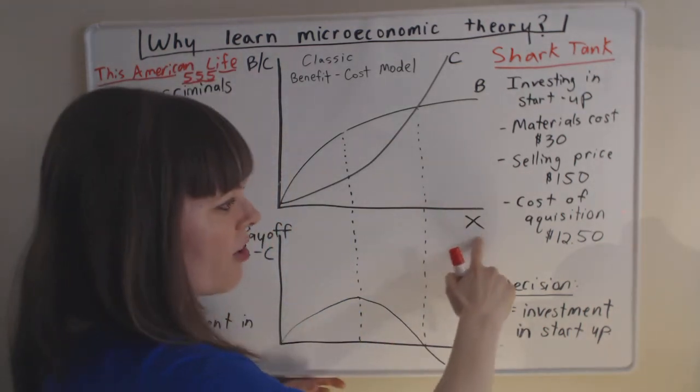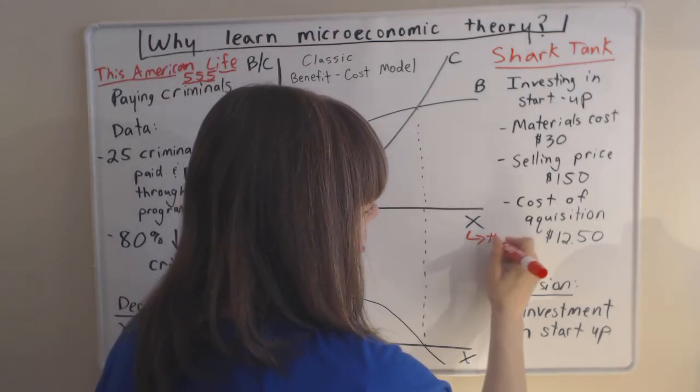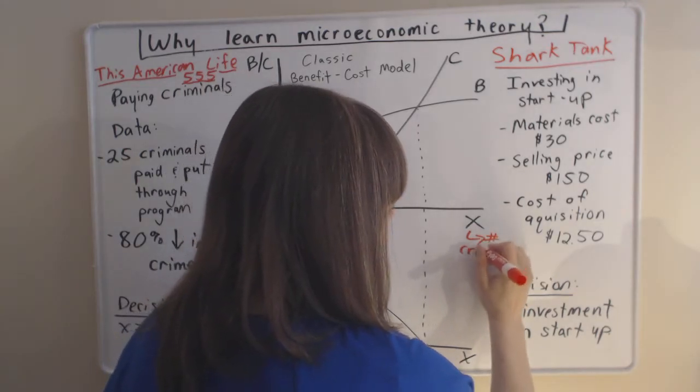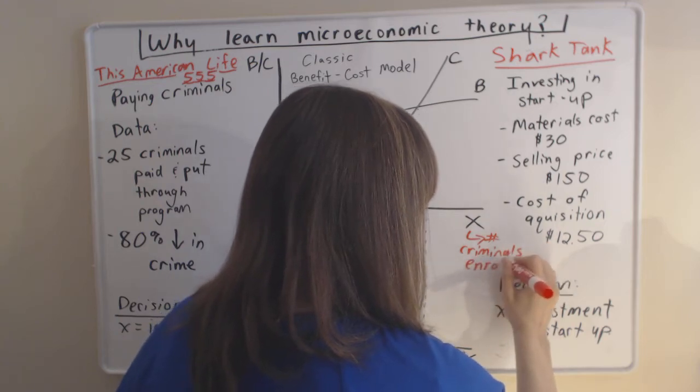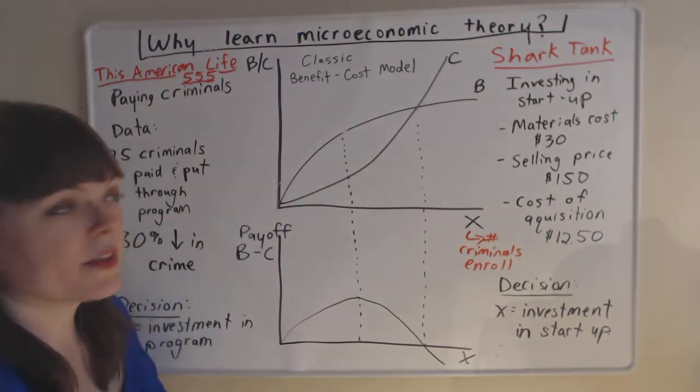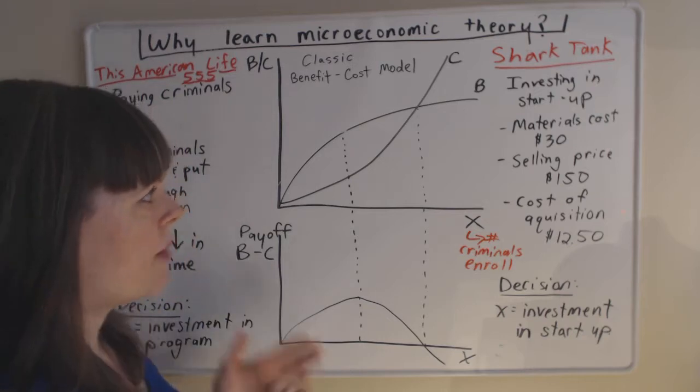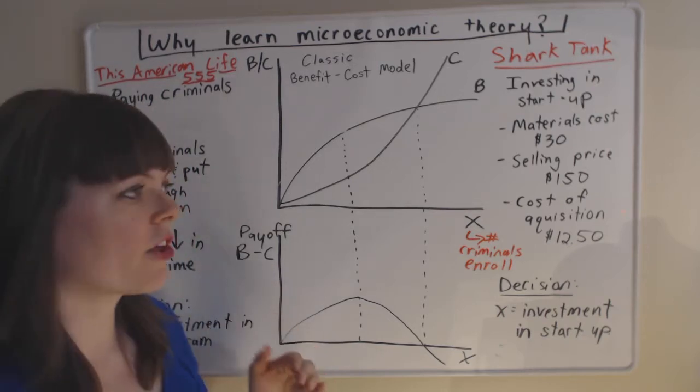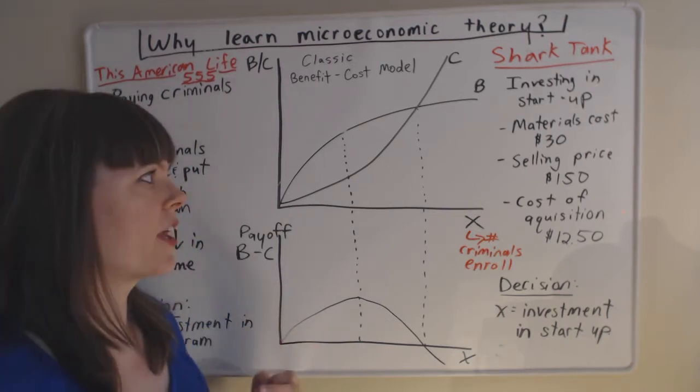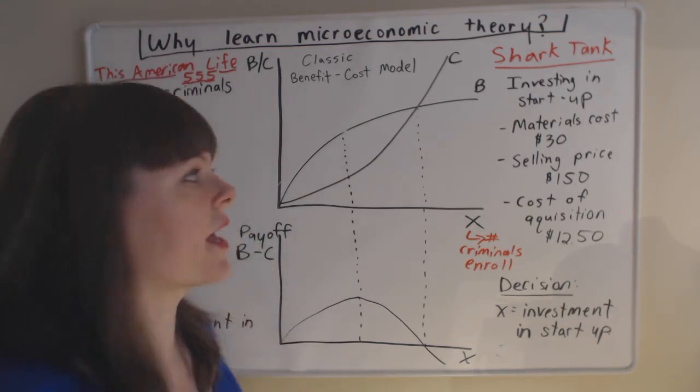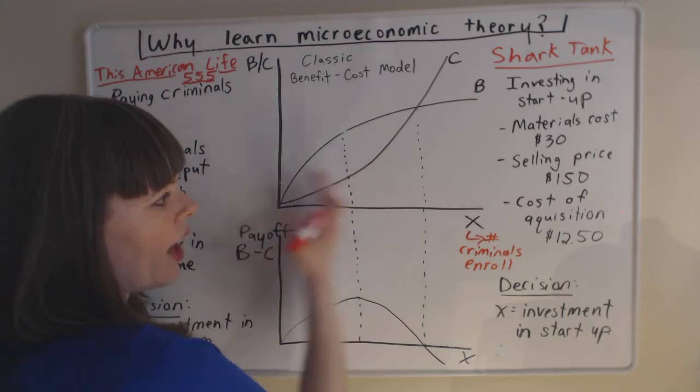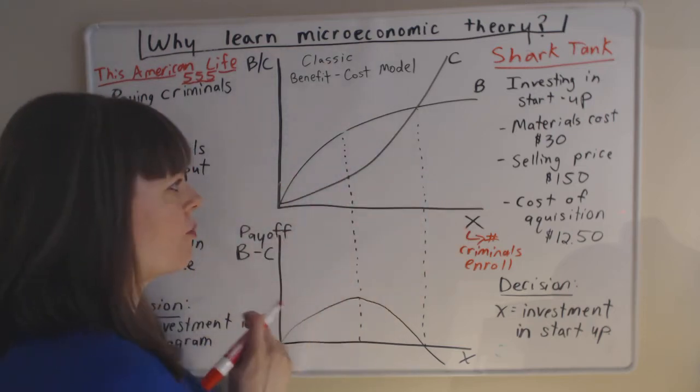And our decision is going to be, it could be dollars invested or it could be, say, number of criminals to enroll. And the benefit is the reduction in crime. The cost is the cost per enrollee. And what we have to keep in mind when we're looking at real-world data like that is that we don't actually know where on this spectrum we are.